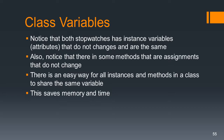We can do a little thing to improve our code — it's a great time to introduce the concept of class variables. Notice that both stopwatches have attribute variables that do not change and are the same. Also notice that in some methods there are assignments that do not change, but every time you click start and stop, those assignments are done again — redundant and unnecessary. There's a very easy way in Python to have all instances in a class share the same variable, saving memory and time.